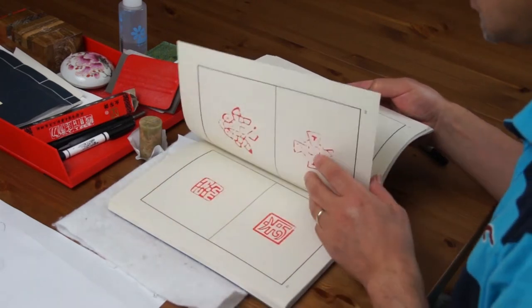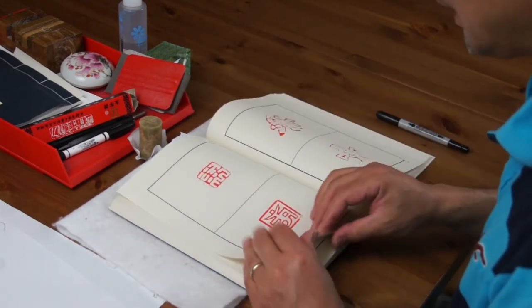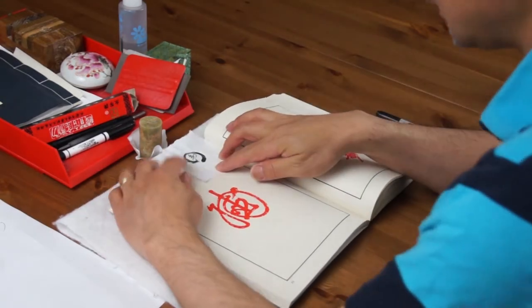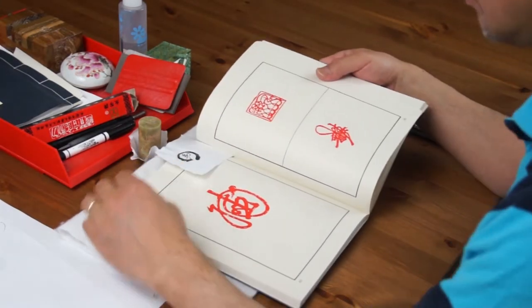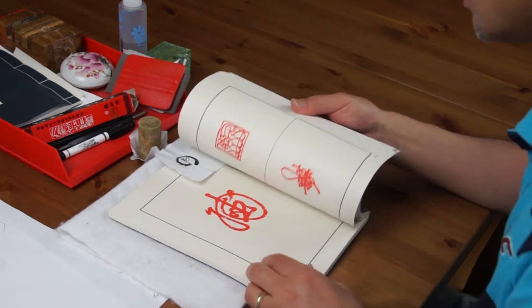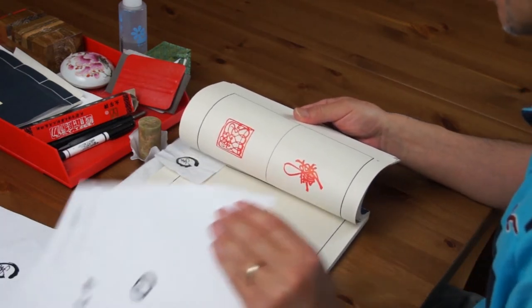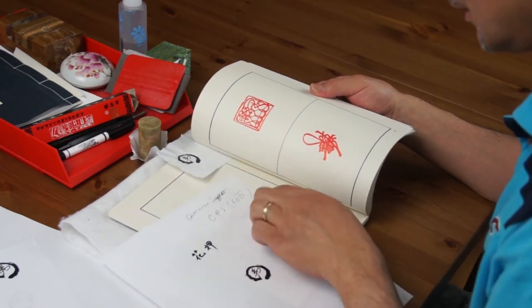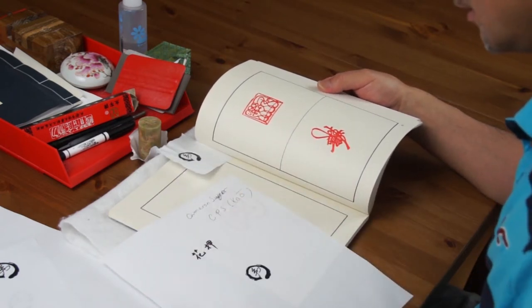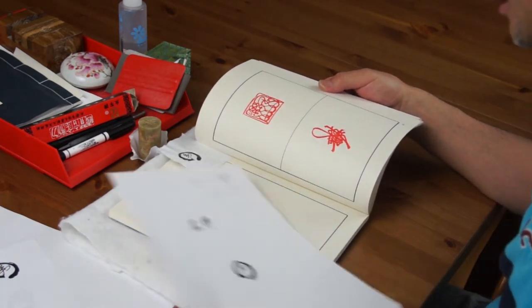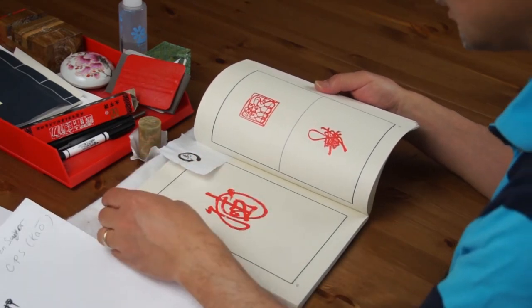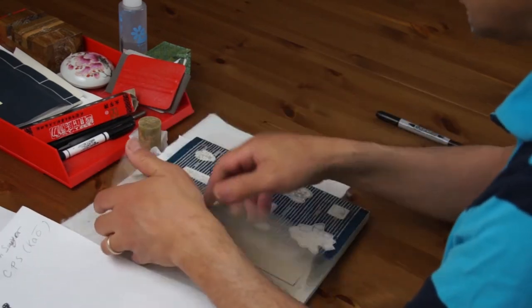It's still being used by politicians in Japan. And every prime minister has this kind of seal. You can search for kao online to find more information.